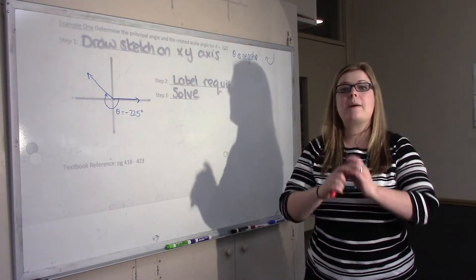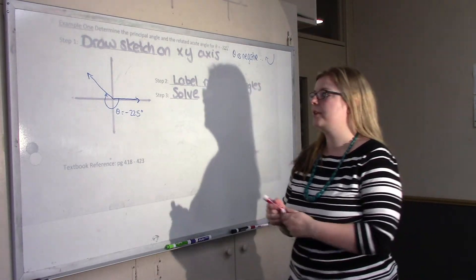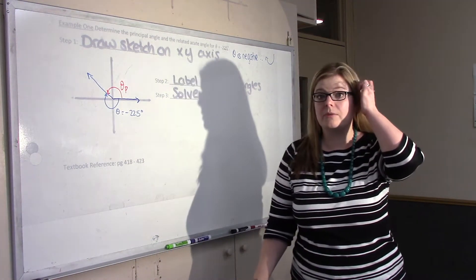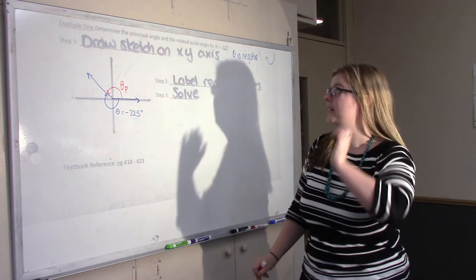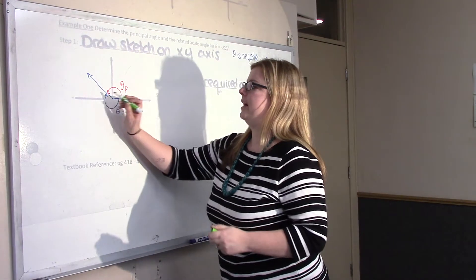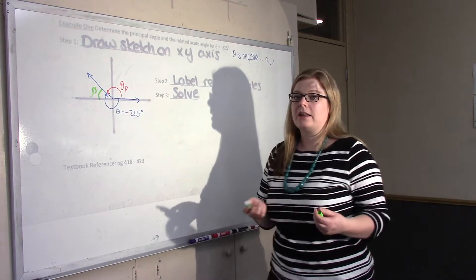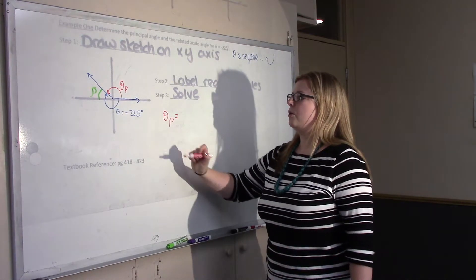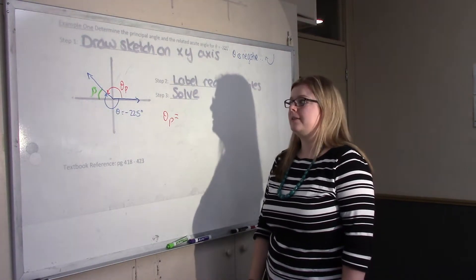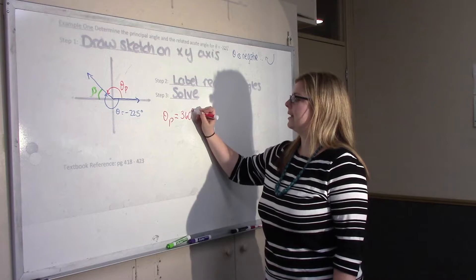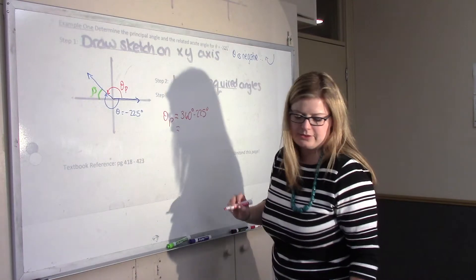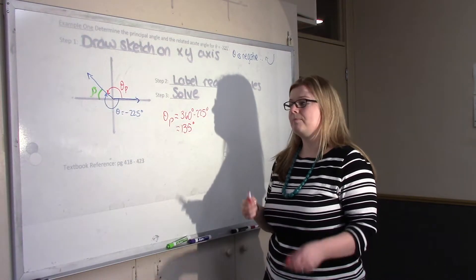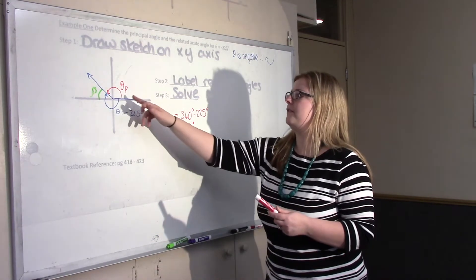The principal angle is the first positive angle with the same terminal arm, so that goes from here to here — we'll call that theta-p for the principal angle. All the way around once would be 360 degrees, and we've taken out 225 of it, so we do 360 degrees minus 225 degrees, leaving 135 degrees. That makes sense because 135 is between 90 and 180, so it lands in quadrant 2. When you add 135 and 225 you get a full 360 degrees.